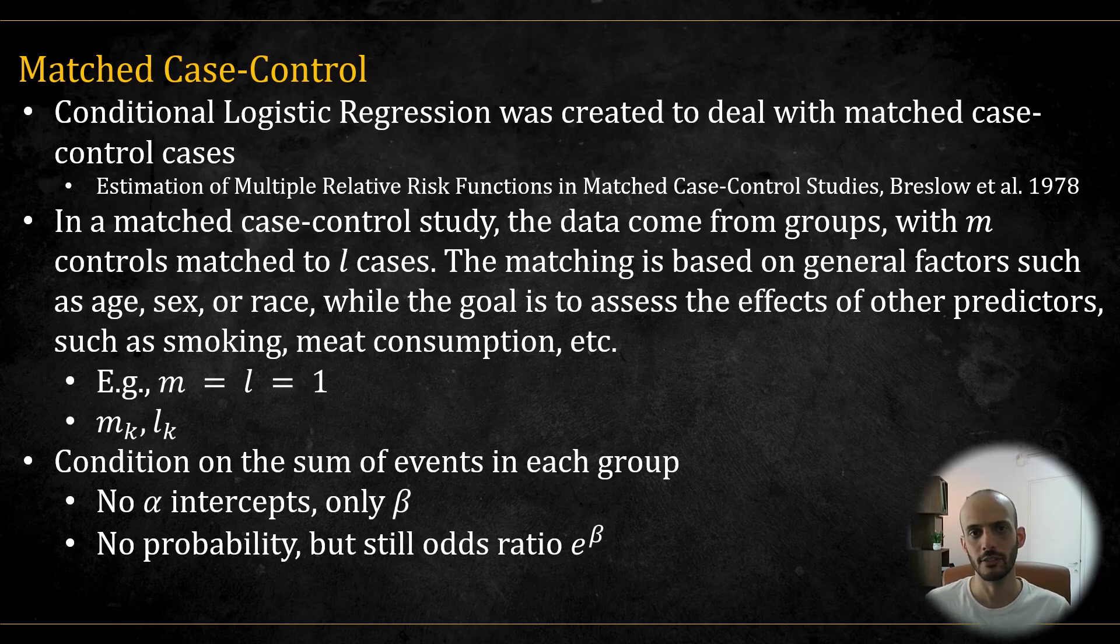Now, conditional logistic regression was originally developed for the case of matched case control studies, as introduced by this paper by Breslow and Associates in 1978. In a matched case control, we have m controls matched to l cases. The matching is typically based on some general factors such as age, sex, race, et cetera. The aim is to assess the effects of other predictors, such as smoking, meat consumption, and so forth, on the probability of getting an event or of getting a y equal to 1.